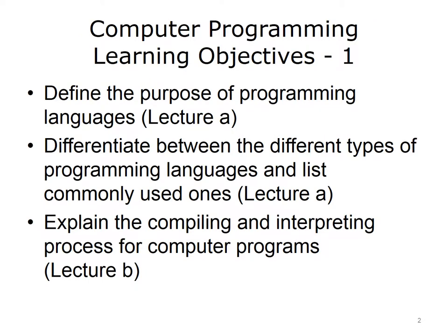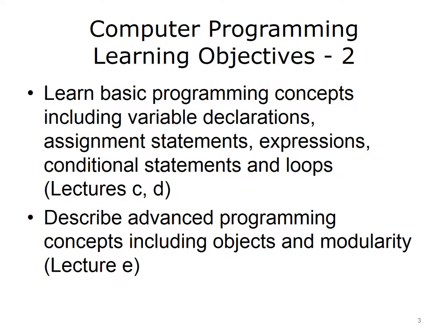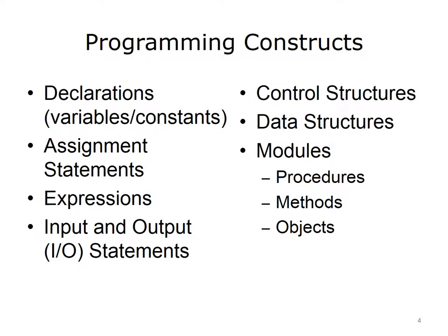The learning objectives for this unit, Computer Programming, are to define the purpose of programming languages, differentiate between the different types of programming languages and list commonly used ones, explain the compiling and interpreting process for computer programs, learn basic programming concepts including variable declarations, assignment statements, expressions, conditional statements and loops, and describe advanced programming concepts including objects and modularity. This lecture focuses on basic programming concepts and includes a program writing exercise to calculate body mass index. This is the first of two lectures covering basic computing concepts.